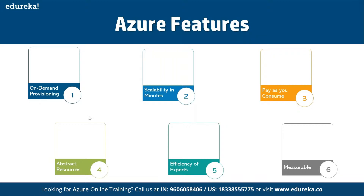Next is abstract resources, where you focus only on your needs and not on hardware specifications. After that is efficiency of experts, where you utilize the skills, knowledge, and resources of experts. The last feature is measurable — every unit of usage, like a unit of electricity, is measurable. You can see why you got charged and track all those things easily. You have complete control with the tools available in Azure.